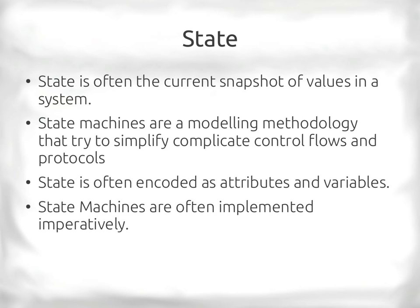State exists throughout OO. Most of your objects contain state, but state can be more complicated in terms of control flow and behavior. Beyond just the current snapshot of what the system is, state can also be the current snapshot of how the system behaves. We often use state machines to simplify complicated behavior — a protocol, for instance, is really well modeled as a state machine.